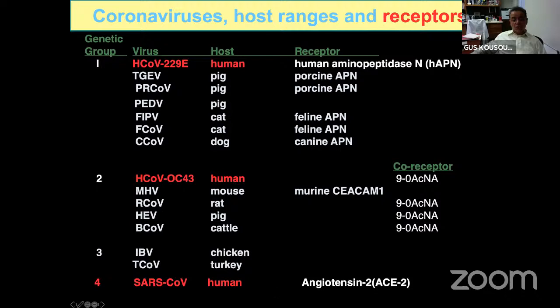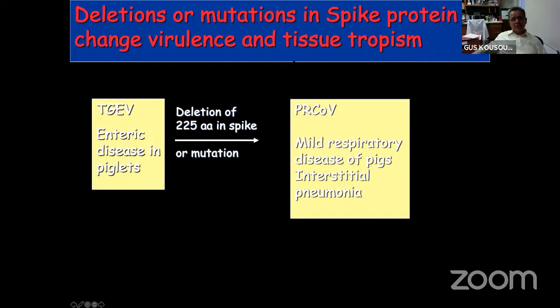SARS-CoV-2 contains additional elements for efficient proteolytic cleavage and exposure of the fusion peptide, making it quite efficient in infection and spread. From animal studies, deletions in the spike protein can change virulence and tissue tropism. A specific example: transmissible gastroenteritis virus is highly pathogenic and enteric in piglets, but if you delete 225 amino acids from the S1 amino-terminal portion of spike, you create a porcine coronavirus causing only mild respiratory disease. This demonstrates how spike protein receptor binding and fusogenic functions are critical for pathogenicity.